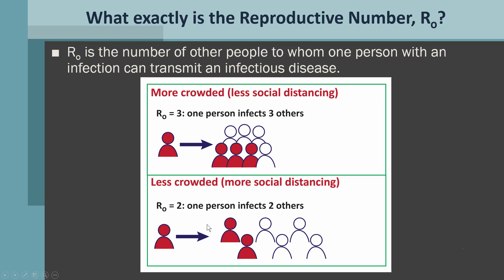If you have aggressive social distancing, then R0 can actually fall down below one. Now, if one person gives it to three, then this person can give it to three more. So that ends up with a situation in which one person ends up giving it to twelve others, who then give it to even more. So if you have a very high R0 of three, you can very quickly have an explosion in the number of cases.